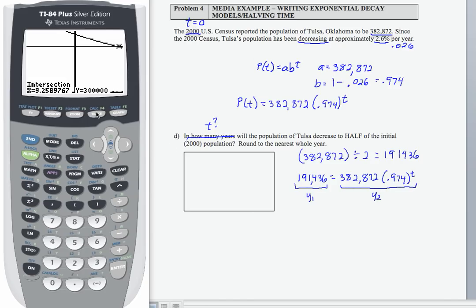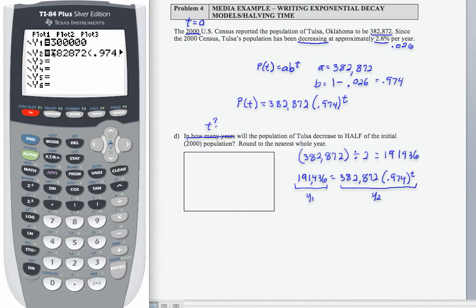Let's indicate what Y1 and Y2 represent. So if we go over to our calculator, you should still have your function P of T entered in for Y2. I'm just going to change the Y1 value to 191,436.